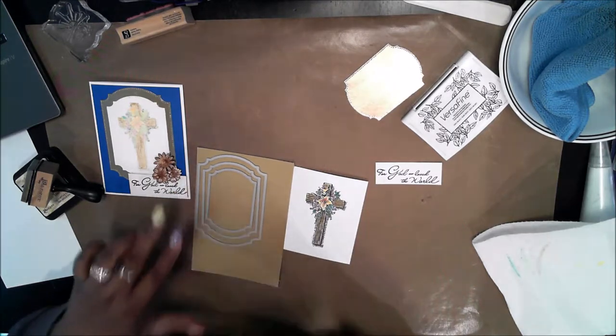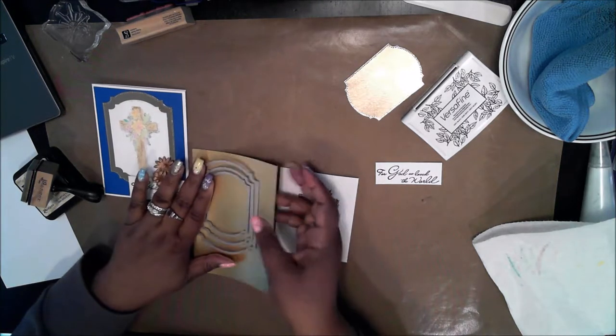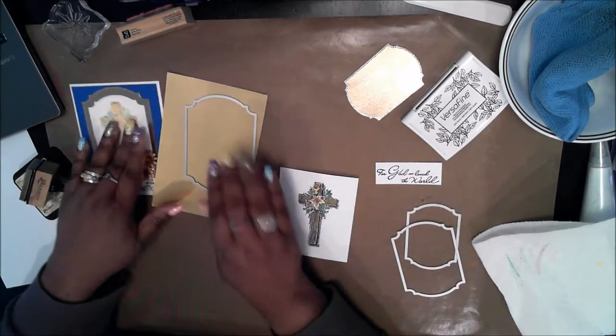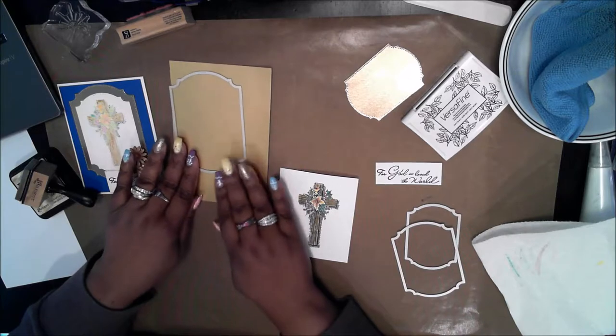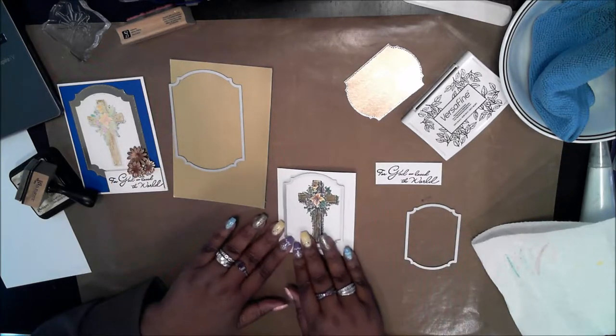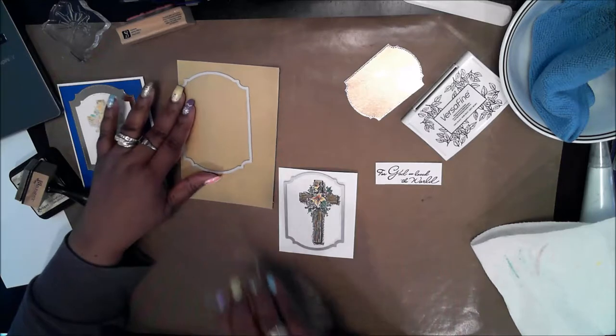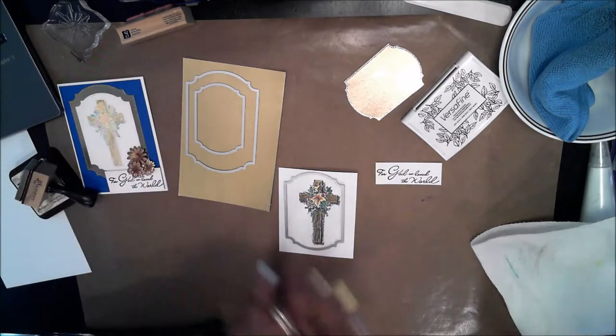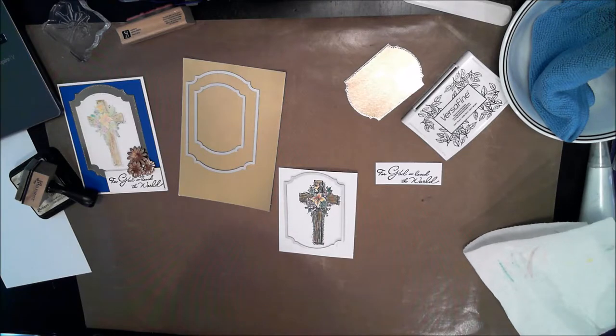So the largest label goes on this one, the next one goes on this one and while I'm cutting out the larger I'm going to cut out the smaller of this so I'm going to take all of this over to my big shot machine and cut it out.